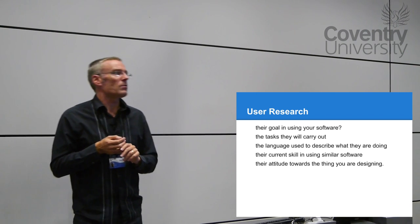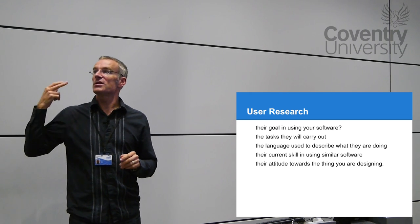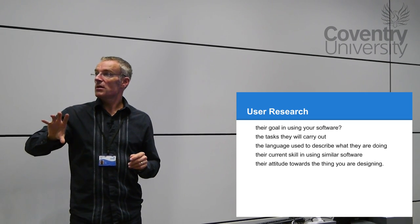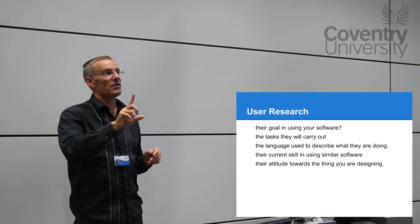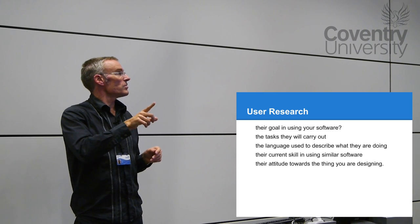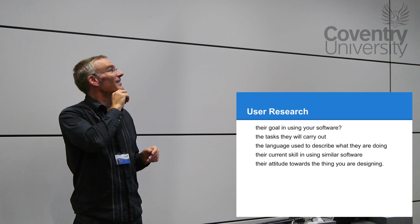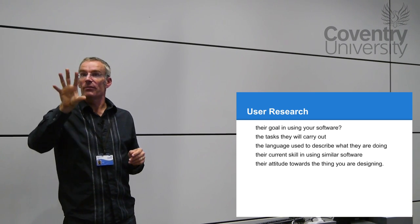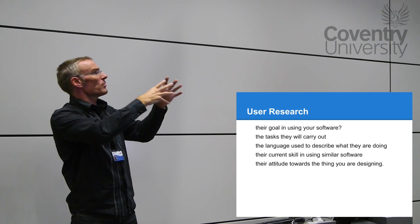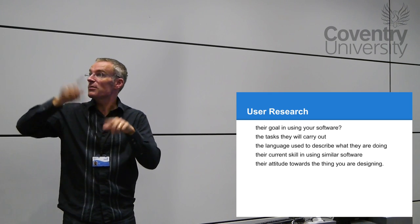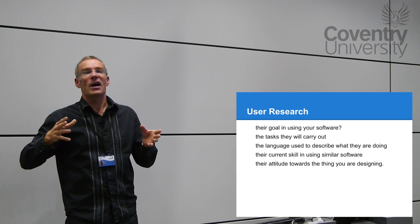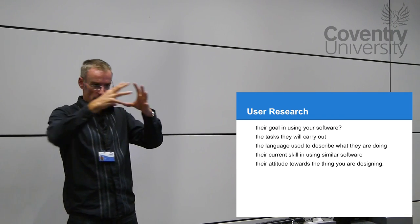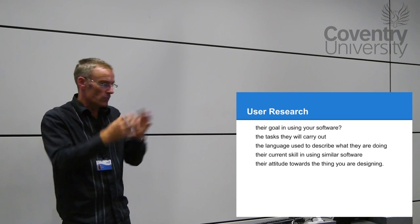A good example: news websites like the Guardian, Independent, and Times all have comment sections at the bottom of articles. But the BBC News website is different — they have a 'Have Your Say' section rather than comments at the bottom. People are used to working one way and then the BBC website works differently, which can cause a disjoint.